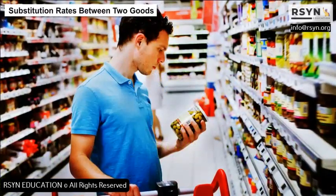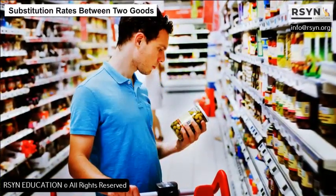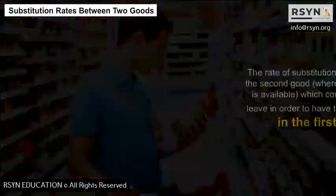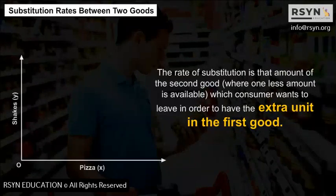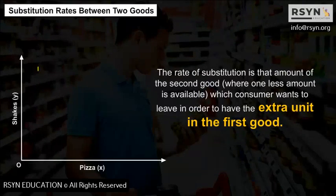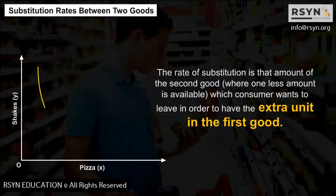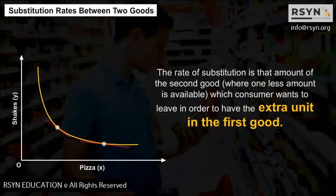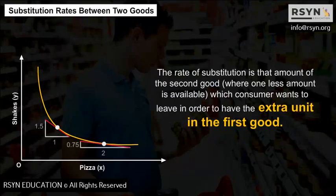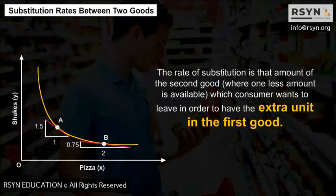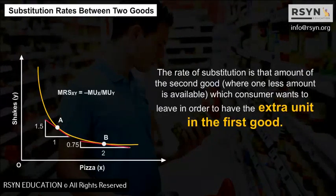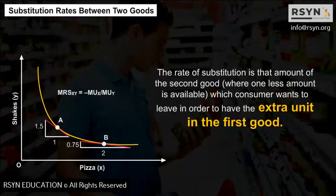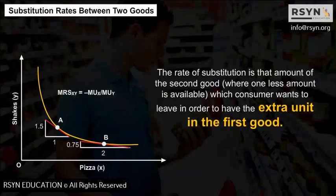Substitution Rates Between Two Goods: The rate of substitution is the amount of the second good that the consumer is willing to give up in order to have one extra unit of the first good.